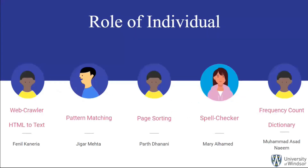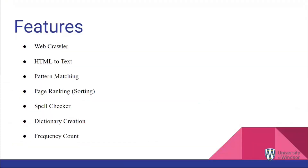These are the roles of each individual. The webcrawler and HTML-to-text feature is done by Fainil. Pattern matching is done by Jigar. Page sorting is done by Paar. Spell checker is done by Mary, and frequency count and dictionary are done by Muhammad Asad. Now Fainil will explain further.